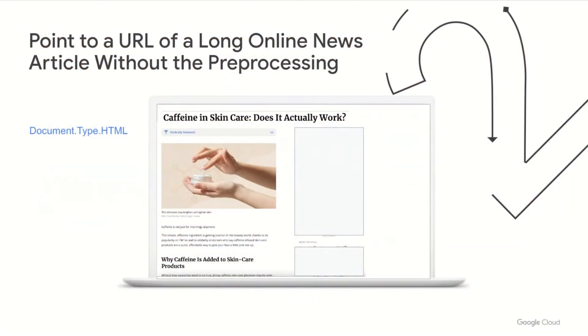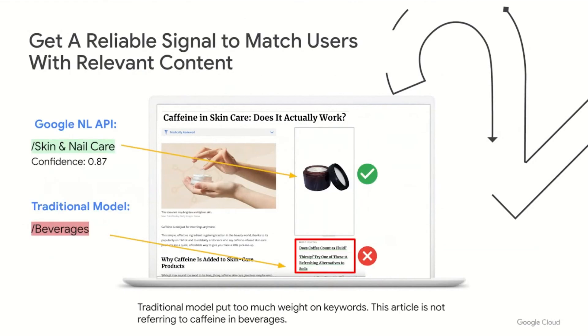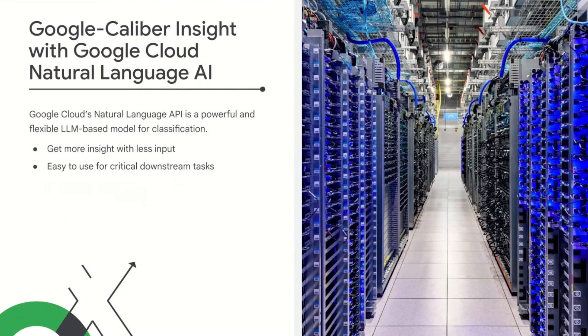Even if the conversation is muddied with side conversation, you can still understand what was actually intended. In another example, you can point to a URL of a long online news article without preprocessing, and you'll get a reliable signal to match users with relevant content. This longer article is about skincare, but it's littered with keywords like "caffeine." A traditional model misclassified this article as a beverage, but the Natural Language API could make an accurate prediction with confidence. That's mission critical because the signal will be used for content-based filtering or a more sophisticated recommendation engine to determine the content shown to users.